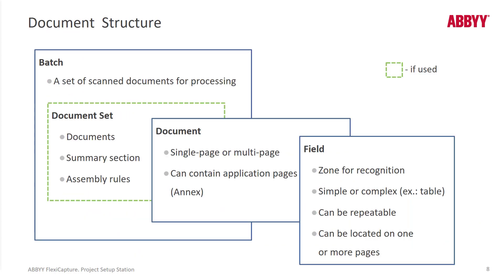A batch is a set of scanned documents. FlexiCapture is a batch-based system, so whenever we're processing documents, they're within a batch. Within that batch, we can have documents and fields. A document set is optional, but you can set one up to specify what the composition of a batch should be — it has very flexible rules, making it a powerful feature.